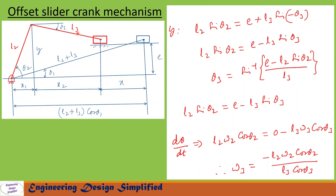In the previous slide we had two unknowns: omega3 and alpha3. Now let us see how to find them. From the vertical component, y = l2·sin(theta2), which also equals e + l3·sin(−theta3). Here counterclockwise angles are positive and clockwise are negative, so theta3 is taken as −theta3. After rearranging: l2·sin(theta2) = e − l3·sin(theta3). Therefore: theta3 = sin⁻¹((e − l2·sin(theta2)) / l3).